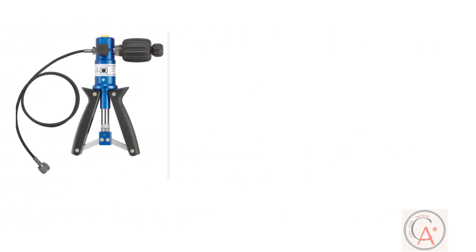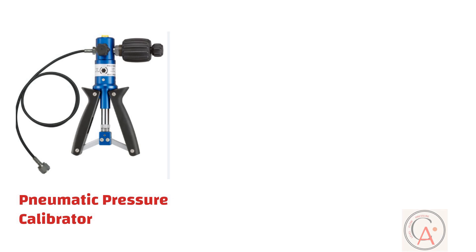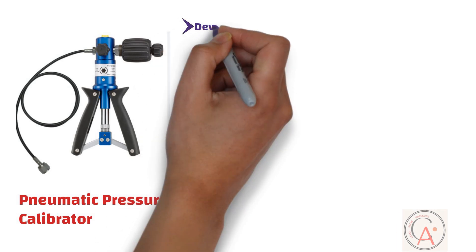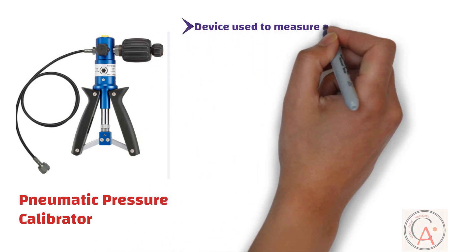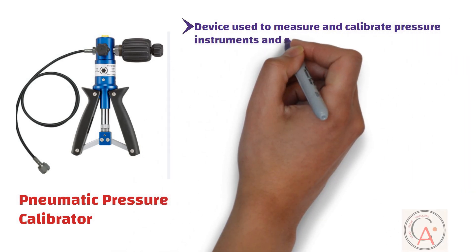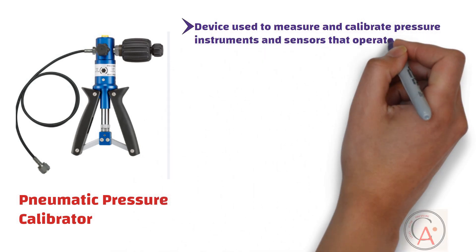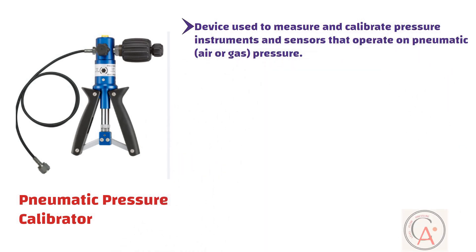The third tool is the pneumatic pressure calibrator, or hand pump. A pneumatic pressure calibrator is a device used to measure and calibrate pressure instruments and sensors that operate on pneumatic air or gas pressure. This type of calibrator is commonly used in industries where pneumatic instrumentation is prevalent, such as in process control systems, manufacturing, and testing environments.